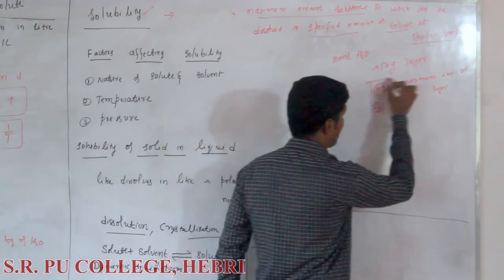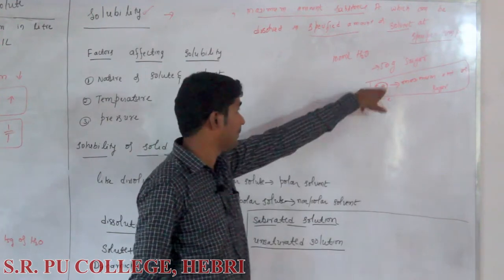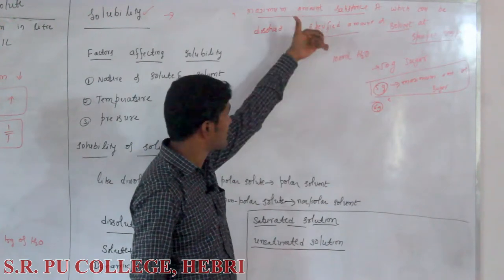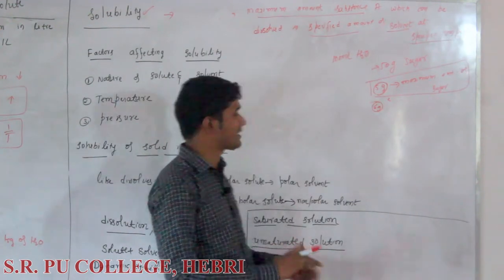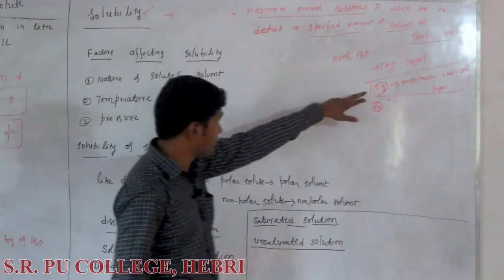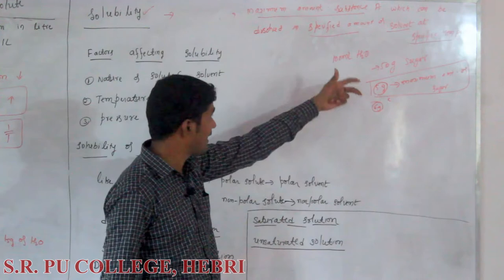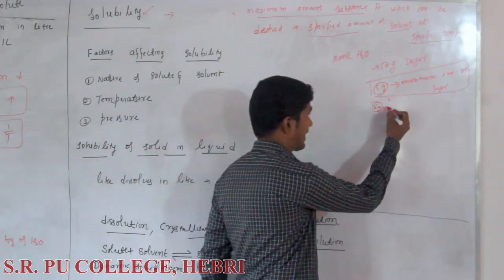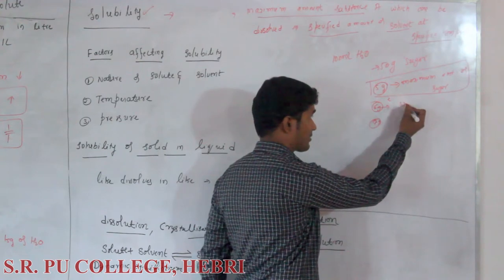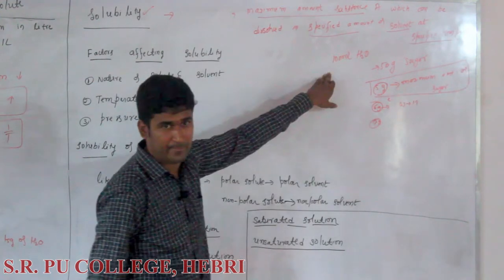5 grams is the maximum amount. Even adding a single crystal of sugar beyond that does not dissolve in 100 ml of water. So 5 grams is its solubility. Note that 5 grams is not an exact value — it is just an example. If 6 grams were the maximum, then 7 grams you could not dissolve, but 6 grams you could.